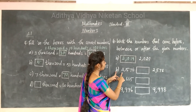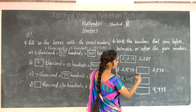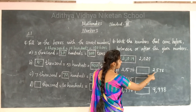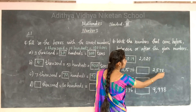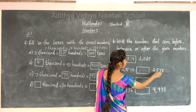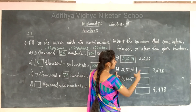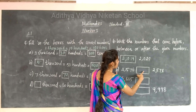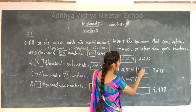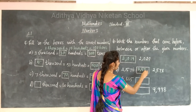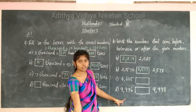Next sum: 2,576. We need to find the in-between (BP) number. The number after 76 is 77 and before 78 is also 77. So the between number is 2,577. The remaining two sums you take as your assignment.